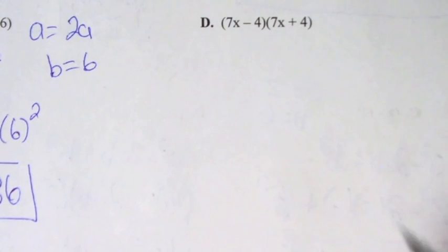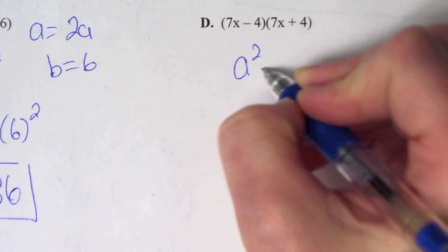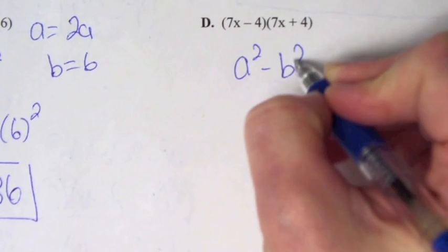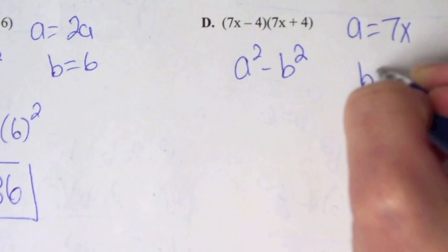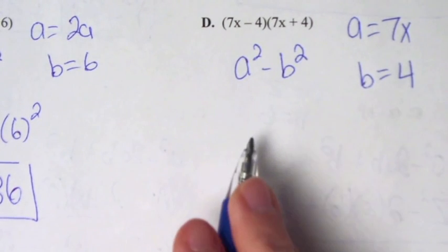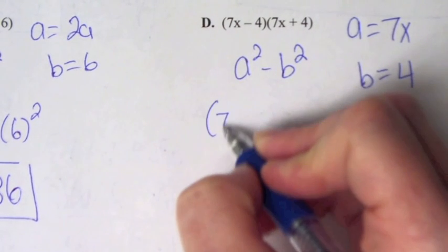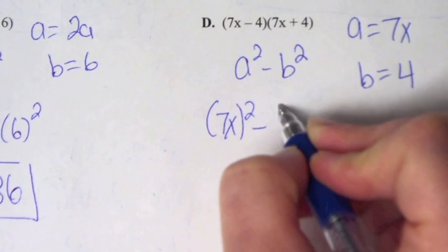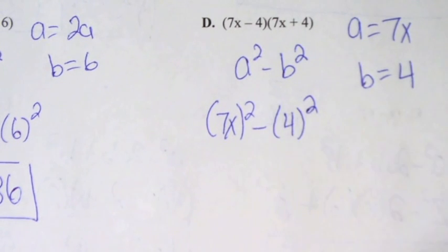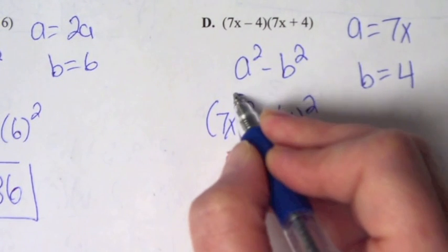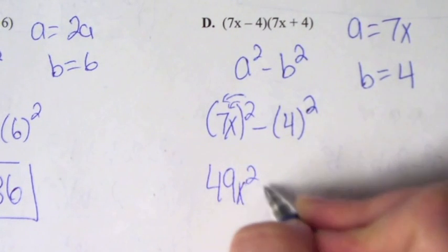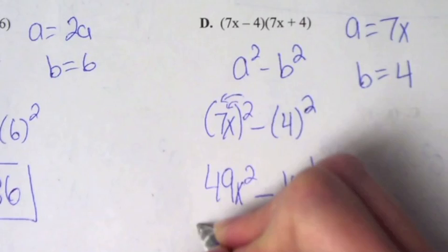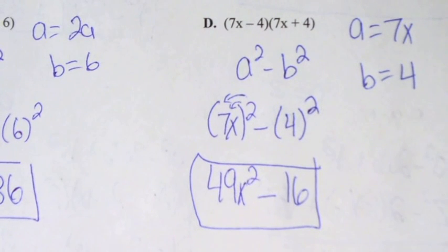For letter D, same thing — a squared minus b squared. A is 7x and b is 4. Plugging these in: (7x) squared minus 4 squared. Distributing the power to both the 7 and the x, we get 49x squared minus 16. And that is how you do a difference of squares.